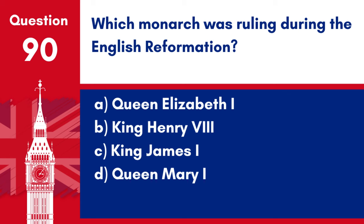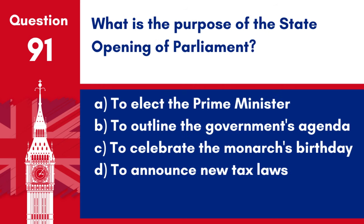Question 90. Which monarch was ruling during the English Reformation? a. Queen Elizabeth I. b. King Henry VIII. c. King James I. d. Queen Mary I. Answer: b. King Henry VIII. King Henry VIII was the monarch during the English Reformation, a period marked by significant religious changes and the establishment of the Church of England.